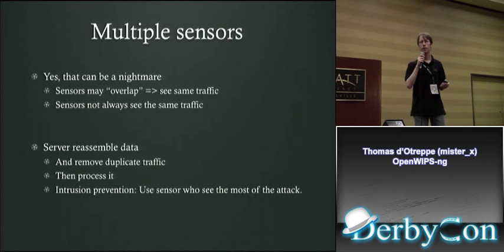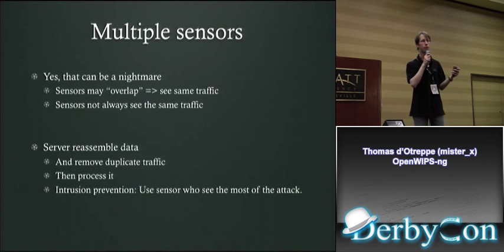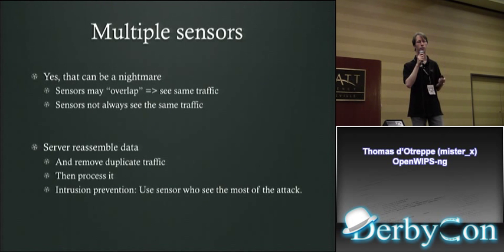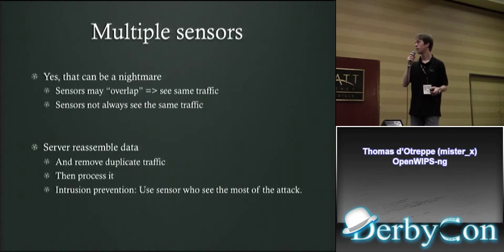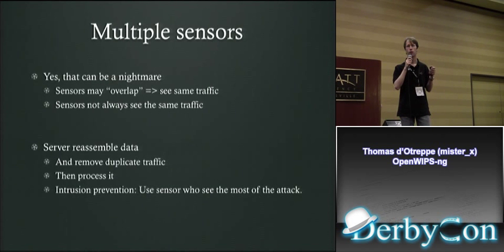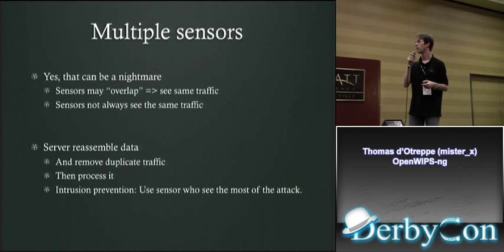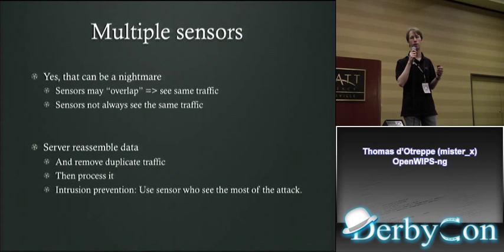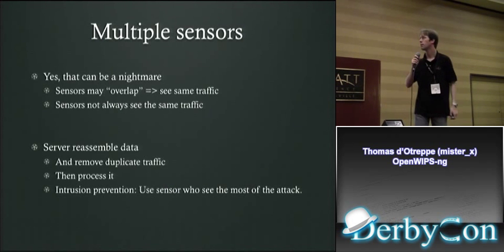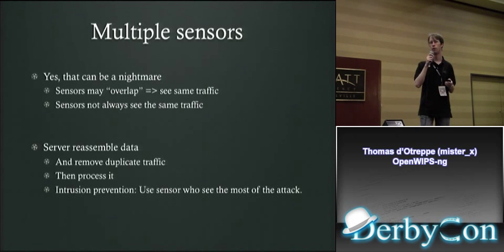Multiple sensors can be a nightmare because they see different parts of the network — sometimes the same parts, sometimes completely different ones. The server takes care of reassembling the data, removing all duplicate traffic, and then processing it by calling plugins. For intrusion prevention, the system will use the sensor that sees the most of the attack.